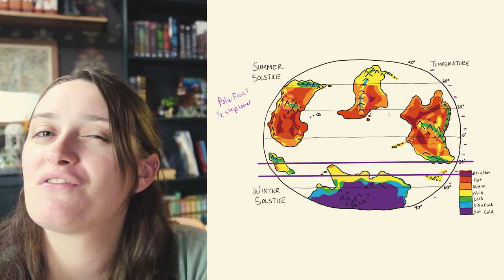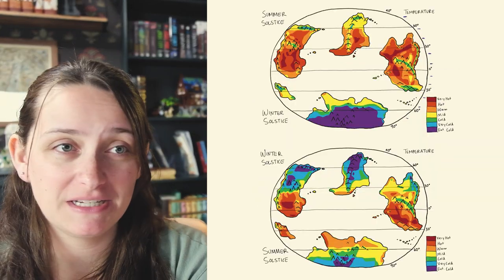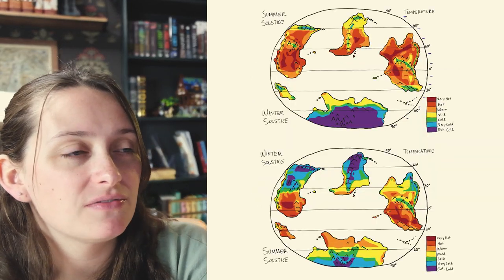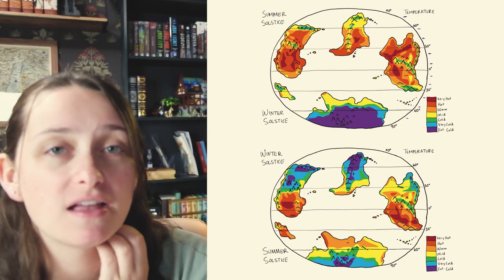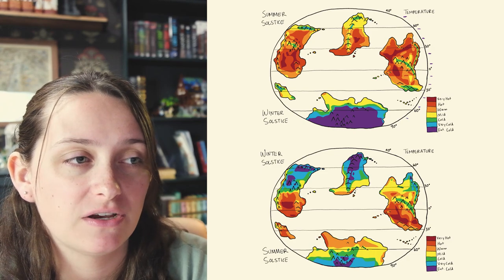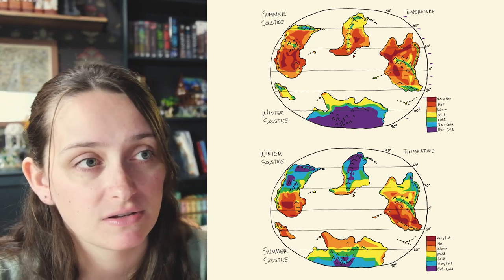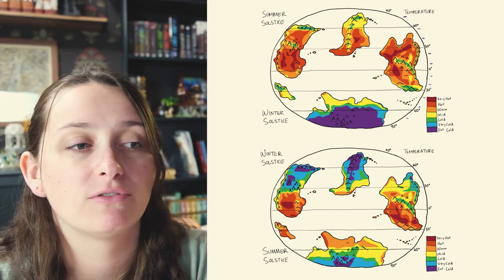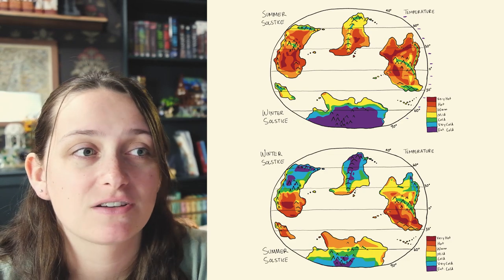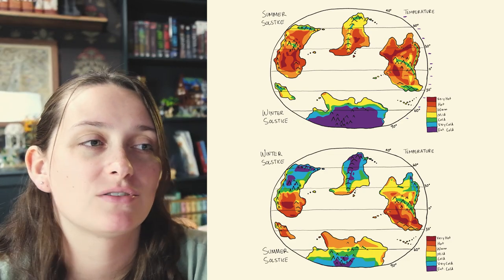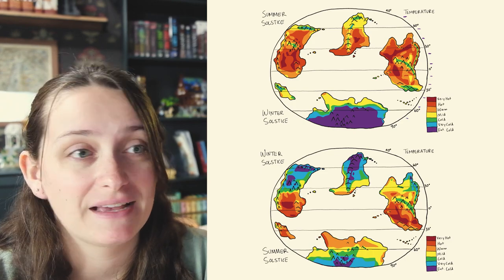Here are my two complete temperature maps, and you can see this all sort of makes a lot of sense. Having a really large continent in the winter hemisphere means it's going to get a lot colder, mainly because of those continental influences. When you have large continents around the equator in the warmer hemisphere, it's going to be pretty warm — so I have that sort of extreme effect, which you can see here pretty clearly.